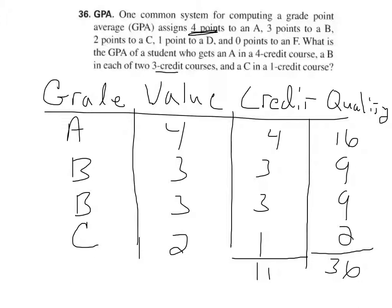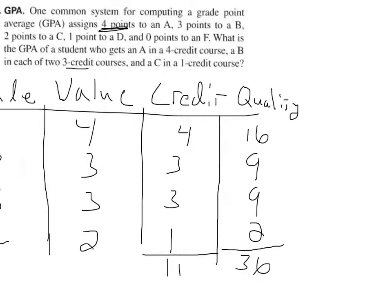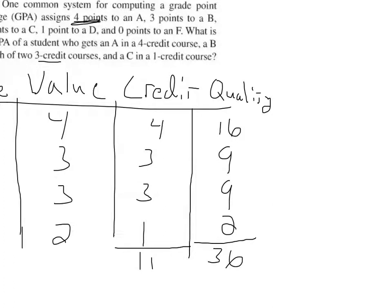And then what we'll do to get the GPA is we're going to take 36 and divide it by 11, and then we usually round to two decimal places. If this is a MyMathLab question, you'll have to pay attention to how many decimal points they want. 36 divided by 11, that is a GPA of 3.27.